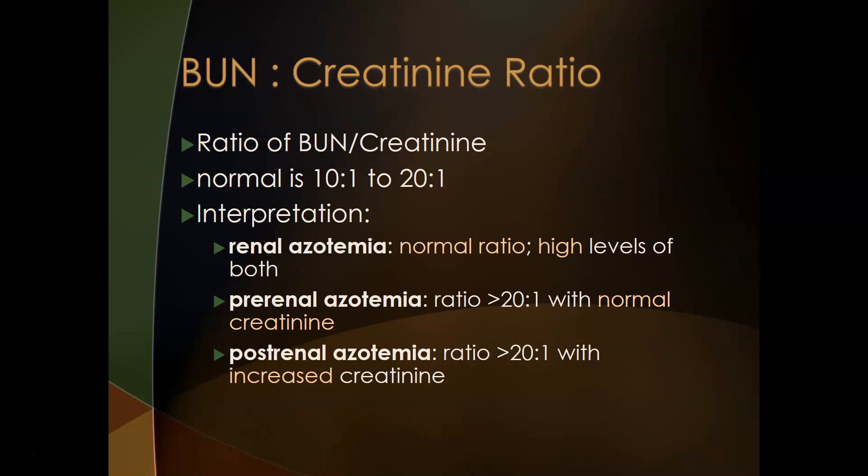With pre-renal azotemia — usually caused by lack of blood flow to the kidneys, dehydration, or congestive heart failure — the ratio is always greater than 20:1, oftentimes with normal creatinine. An elevated BUN:creatinine ratio likely indicates dehydration or congestive heart failure; patient history is needed to determine which.